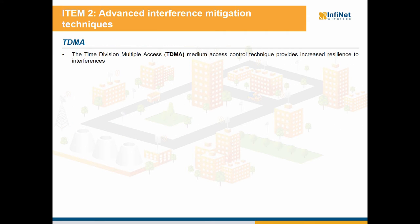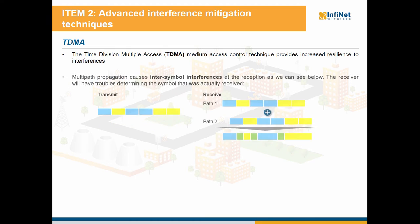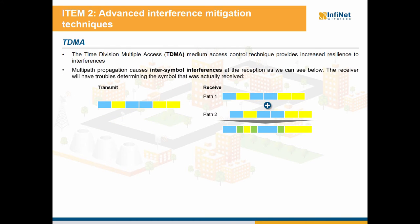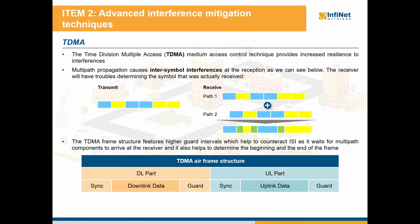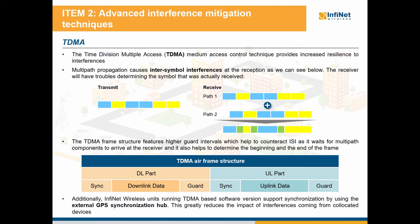Let's move forward and discuss about TDMA. The TDMA medium access technique provides increased resilience to interferences. Because multipath components arrive at the receiver, they will mix up and lead to inter-symbol interferences, making it difficult for the receiver to decide which symbol was actually received. The TDMA frame structure features higher guard intervals, which help to counteract this as it waits for multipath components to arrive at the receiver and also helps to determine the beginning and end of the frame. Additionally, Infinite Wireless units running the TDMA-based software version support synchronization by using the external GPS synchronization hub, which greatly reduces the impact of interferences coming from co-located devices.